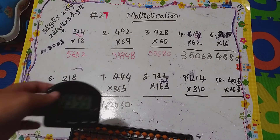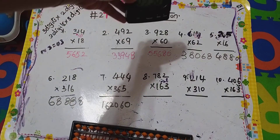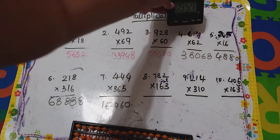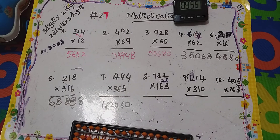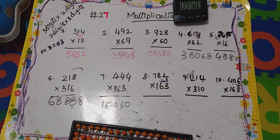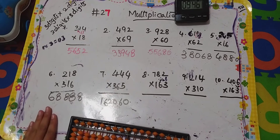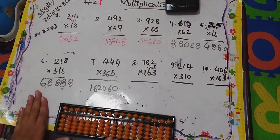Hello viewers, let's start today's class. Last class we already saw multiplication — three digit times three digits — so we left with a few problems. Today's class we'll see those problems.